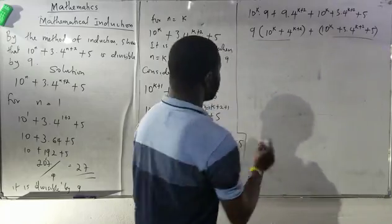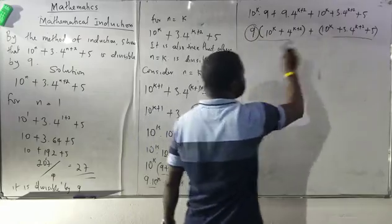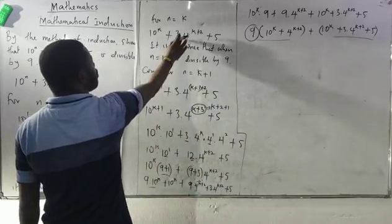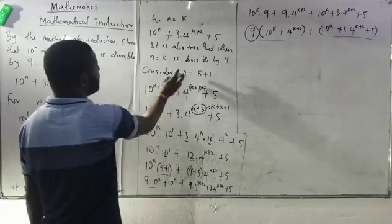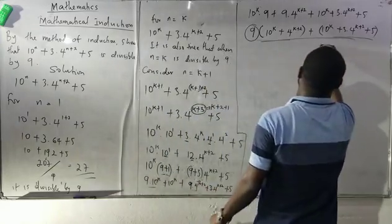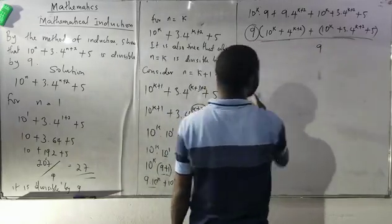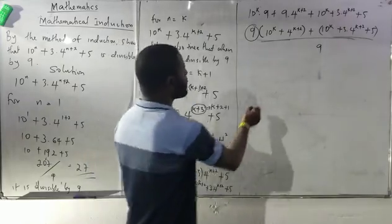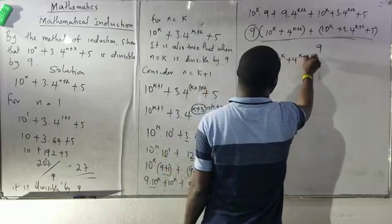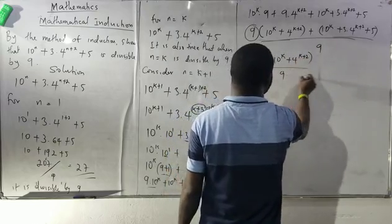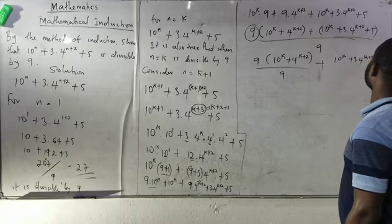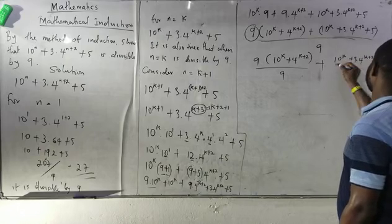You can see that the first part carries factor 9, and the second part — 10^k plus 3 dot 4^(k+2) plus 5 — has already been proved to be true and divisible by 9 when n equals k. So if we divide the whole expression by 9: 9 bracket of 10^k plus 4^(k+2) divided by 9, plus 10^k plus 3 dot 4^(k+2) plus 5 divided by 9.